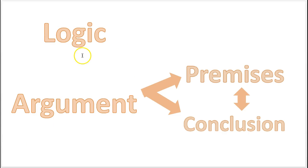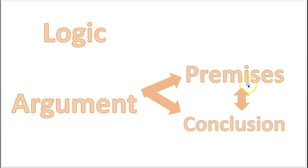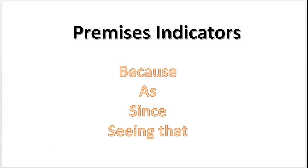So you've learned what logic is — the science of evaluating an argument. An argument is a group of words communicated with the intention to prove a point. In that group of words, you can dissect and separate them into two categories: the premises and the conclusion. There is usually only one conclusion and several premises — one point and several reasons for that point. The first step is identifying these two things in the argument. One way to identify them is to look for key words or indicators. To find premises, look for premise indicator words like 'because,' 'as,' 'since,' 'seeing that.'